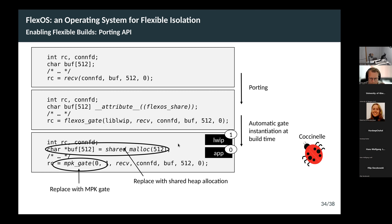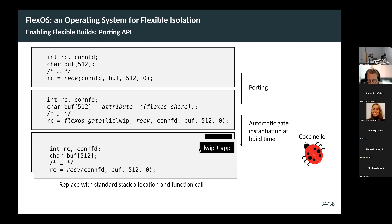Our toolchain at compile time, if we decide the application and TCP stack should be in separate compartments, will instantiate the gate with whatever isolation mechanism we want — say an MPK gate — and put the buffer into a shared memory area. But we can also decide that the TCP/IP stack and application should go into the same compartment, in which case our toolchain replaces things with just a normal allocation and normal function call.